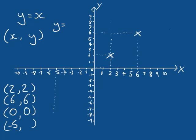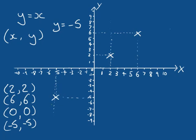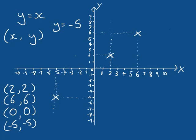And our last point: X equals negative 5 means Y is equal to negative 5, giving us a point at (−5, −5). So we have four points: (2, 2), (6, 6), (0, 0), and (−5, −5). If we connect these points with a straight line, we will have a line that is the graphical representation of the equation Y equals X.